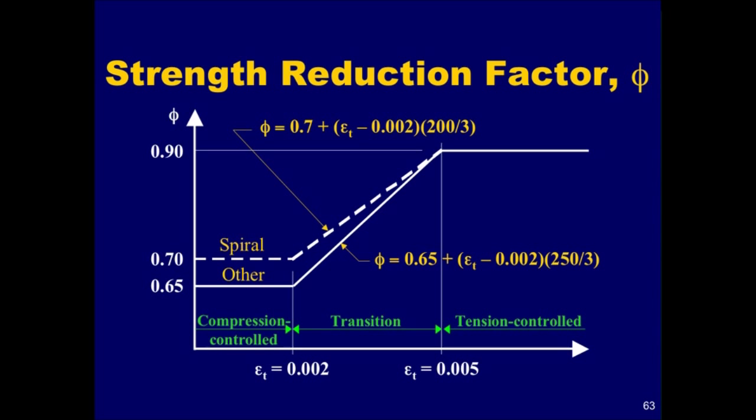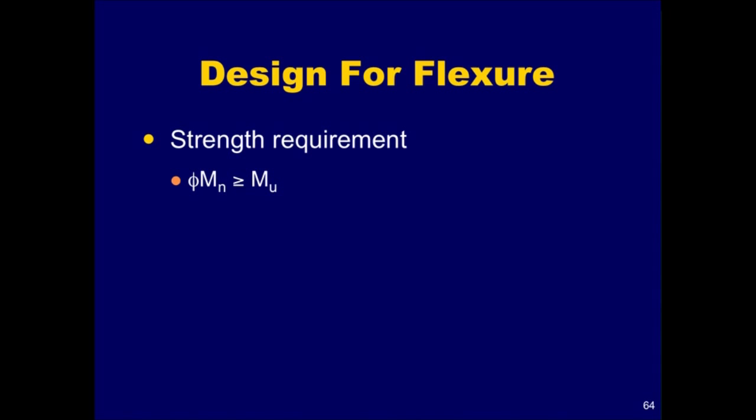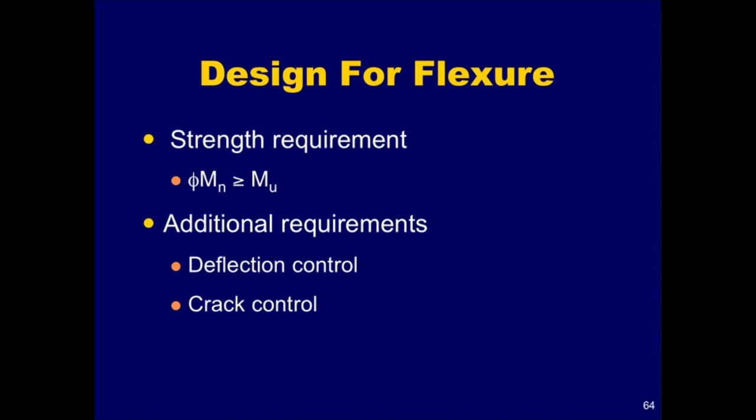The equations can be used to determine phi in the transition region. With the information that has been developed in this section, we are now prepared to design reinforced concrete beams and one-way slabs for flexure. For design or investigation of members subjected to flexure, the nominal strength of the cross-section, M sub n, must be reduced by the strength reduction factor phi to obtain the design strength, phi M sub n. The design strength must be greater than or equal to the required strength, M sub u. In addition to satisfying this basic strength requirement, serviceability requirements for deflection control and proper distribution of flexural reinforcement for crack control must also be satisfied. All of these requirements will be covered in this section.